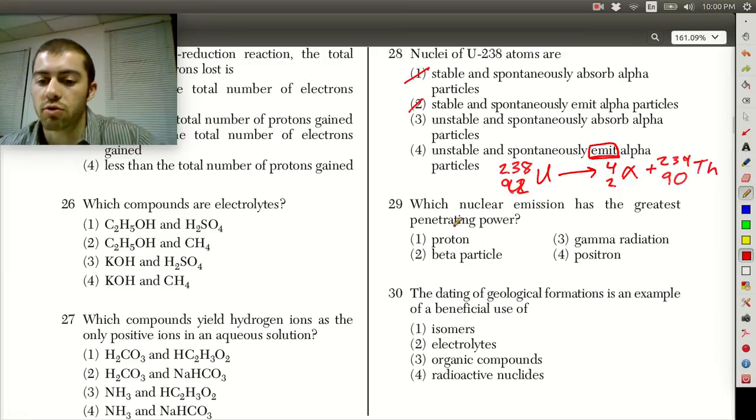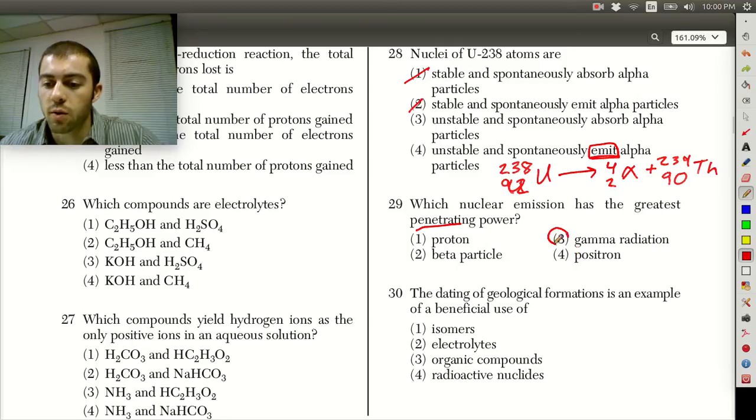For question 29, which emission has the greatest penetrating power? So all of these particles have mass except for number 3 here. So gamma radiation is pure energy. So there's no mass to gamma radiation. So this is going to have the highest penetrating power because it has no mass. It has a very high energy.